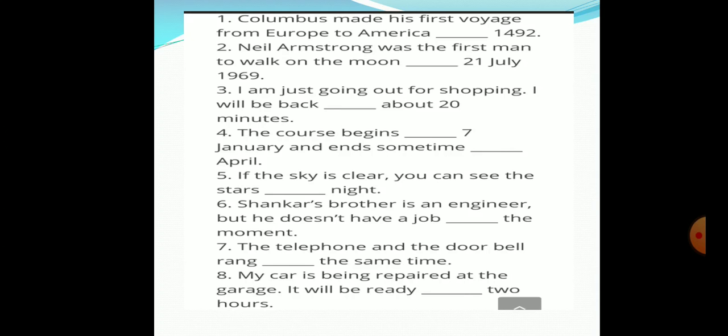Sixth one, Shankar's brother is an engineer but he does not have a job at the moment. Seventh one, the telephone and the doorbell rang together at the same time. Eighth one, the car is being repaired at the garage. It will be ready in two hours. These are the eight correct examples. Fill them appropriately with pencil.